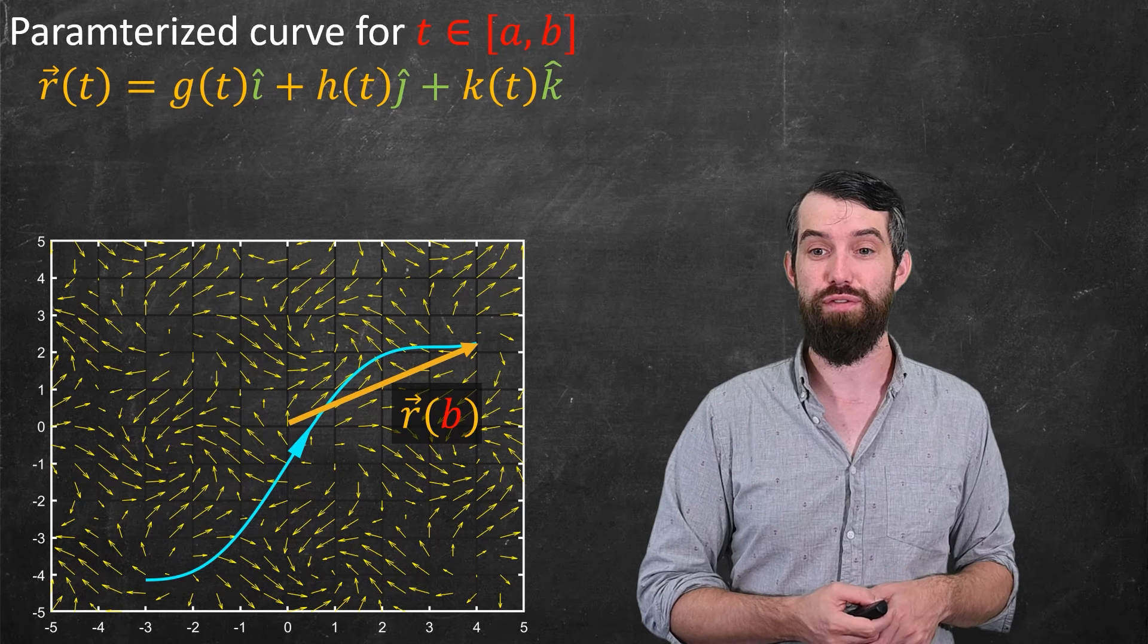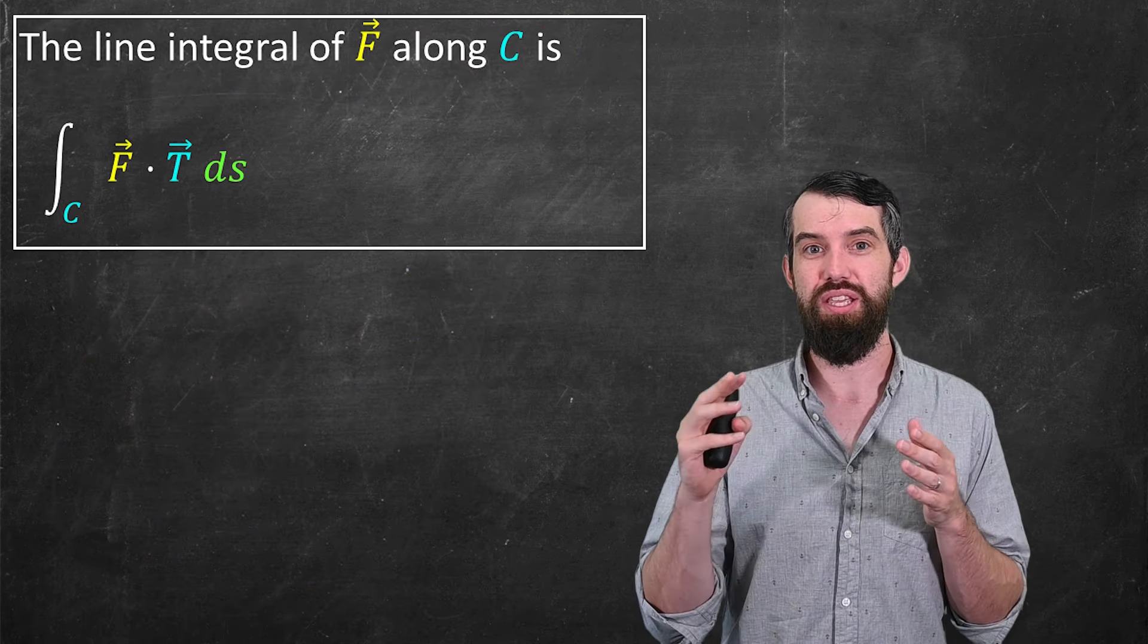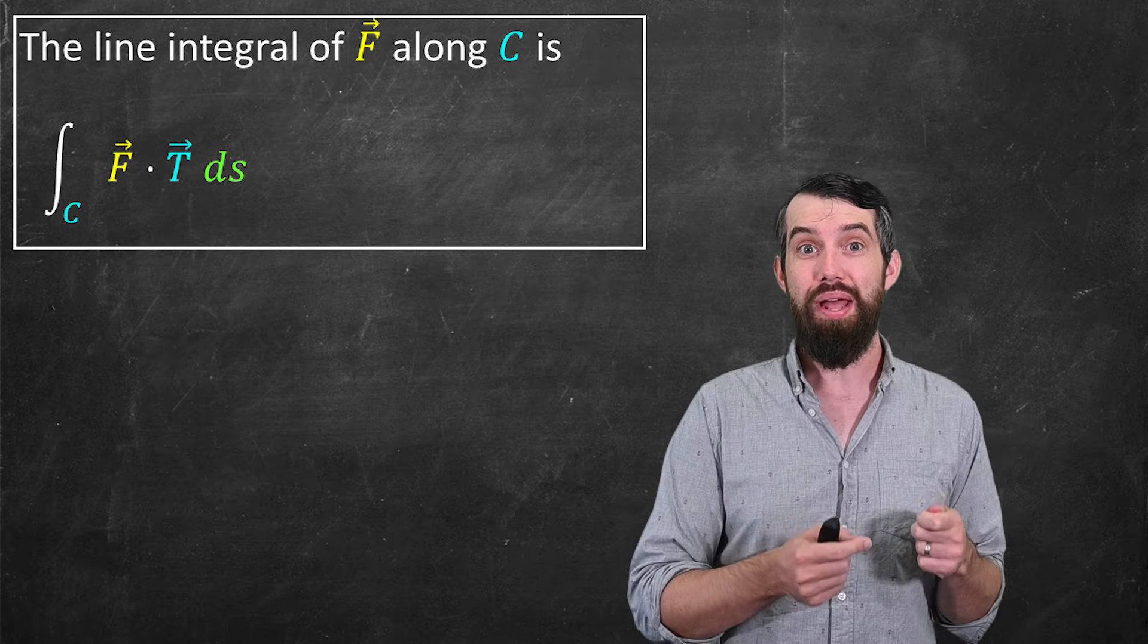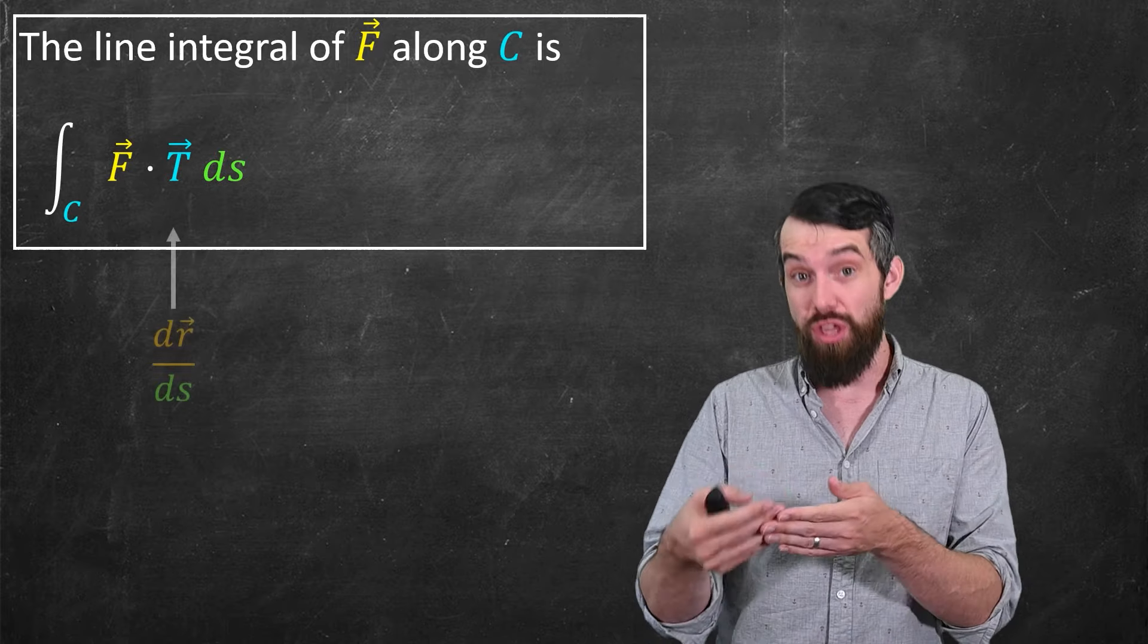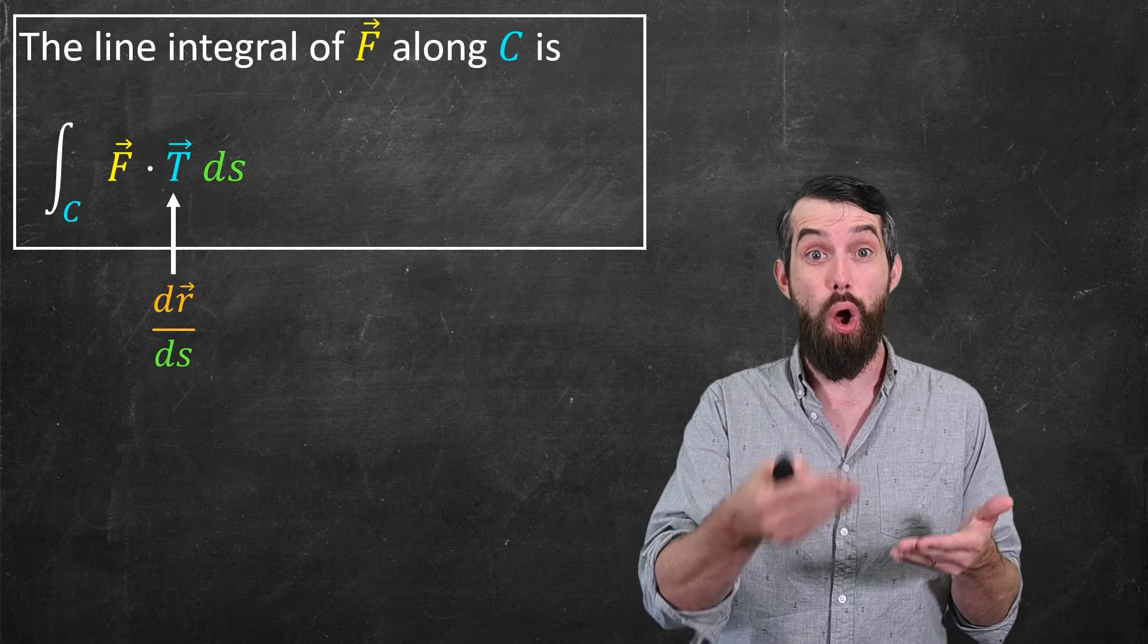Okay, so that's the parameterization for the curve. So now I want to go back to the formula I had. There are several changes I can make. Notice how there's the unit tangent vector t in this formula?